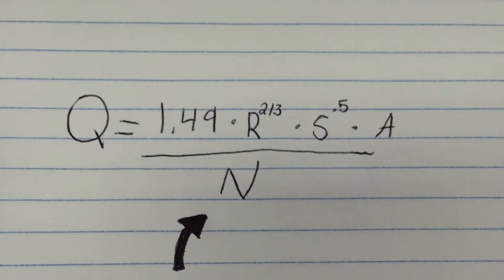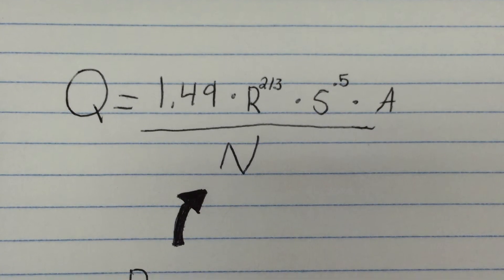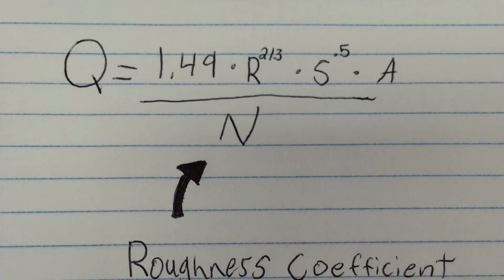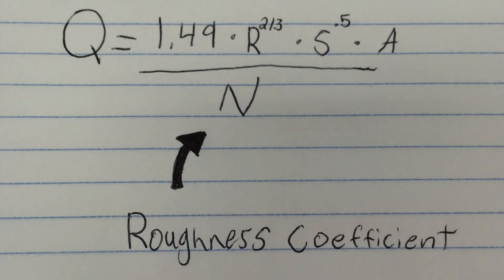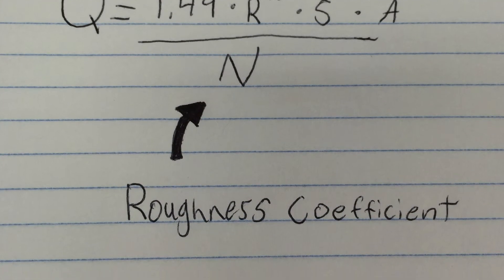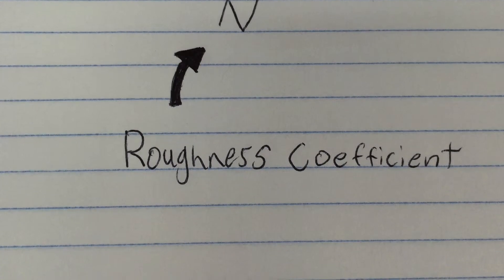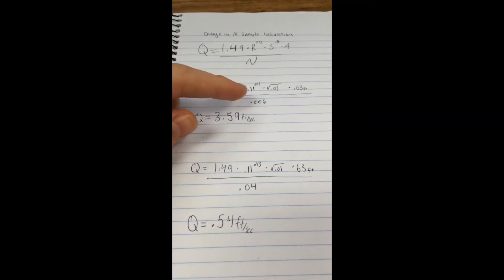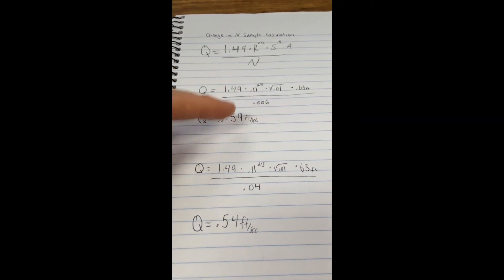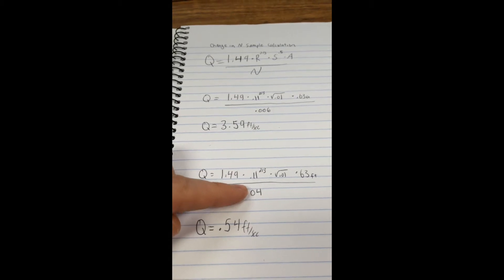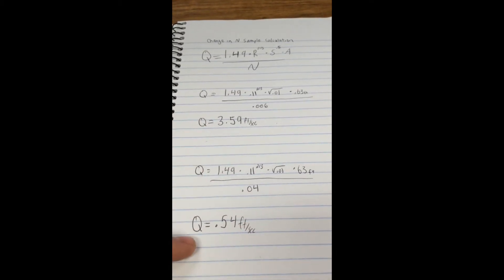The other important value we wanted to talk about was Manning's n value, or the roughness coefficient. This value is basically the friction that the surface of the channel has on the water running through it. Unlike slope, when we increase our n value, our flow rate will actually decrease because there is more friction holding the water back. As you can see in the calculation, a simple change from an n value of 0.006 to 0.04 gives us very different Q values.